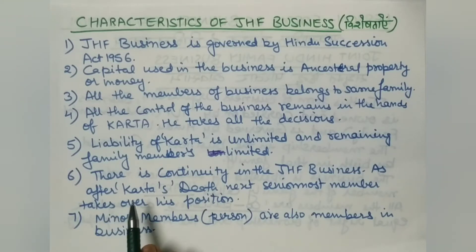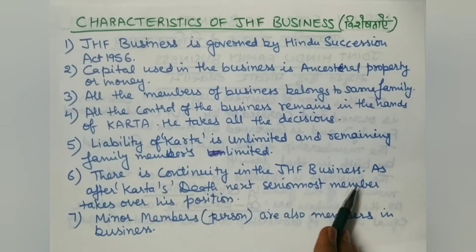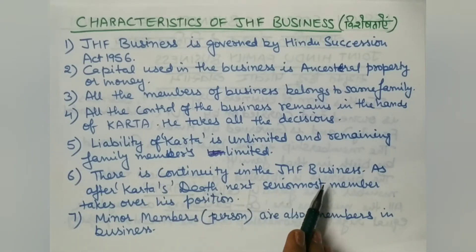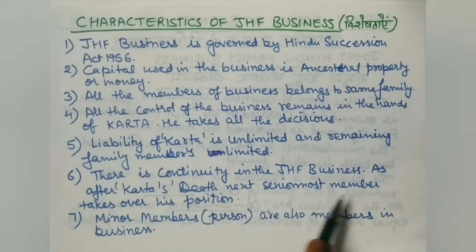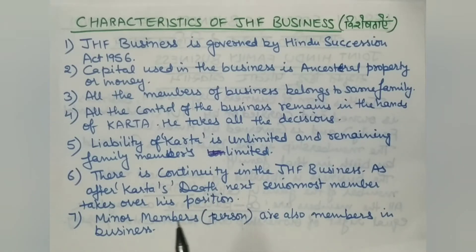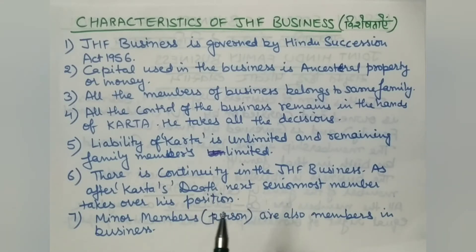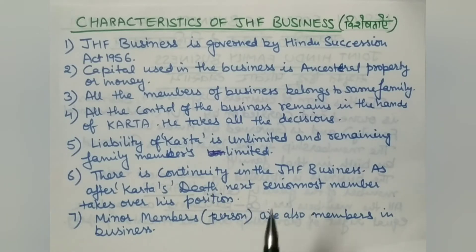There is continuity in the Joint Hindu Family Business. When the Karta passes away, the next senior-most member takes over his position. Because this is a family business, the most senior member always takes over the business after the previous Karta's death.